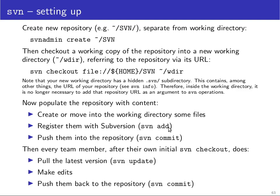You use the svn add command to tell Subversion which files in your working directory you actually want to track. When you've done this, that doesn't actually add the files to the repository yet — the svn commit command is the first command that actually contacts the repository and sends the added files there. After that, every team member who also has their own working directory can do an svn update, then make some edits, and then push those edits back with svn commit. They will also be asked for a commit message.